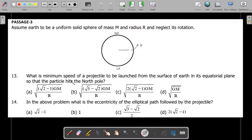Assume Earth to be a uniform solid sphere of mass M and radius R and neglect its rotation. What is the minimum speed of projectile to be launched from the surface of Earth in its equatorial plane so that the particle hits the North Pole? So from equator, you're supposed to throw right in such a way that it hits the North Pole and among all those throws that are possible, what is the minimum speed he's requesting you to find out?